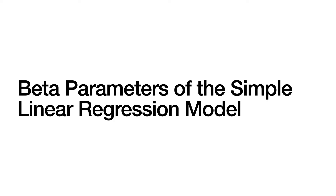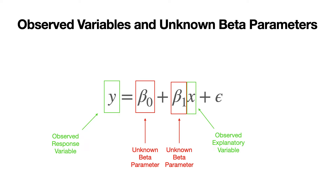Now let's take a look at the parameters of the simple linear regression model, and in particular the beta parameters. Looking at the canonical form, we have observed variables and unknown beta parameters. We also have the unobservable error term, but our focus right now is on the observed variables and the unknown beta parameters. So y and x are the observed variables — y is the observed response variable and x is the observed explanatory variable. Beta zero and beta one are the unknown beta parameters, and they must be estimated.